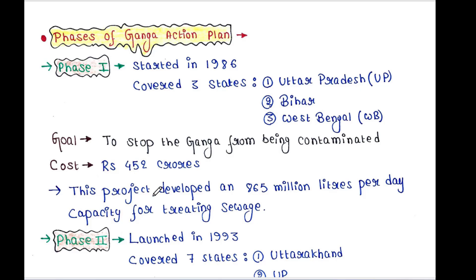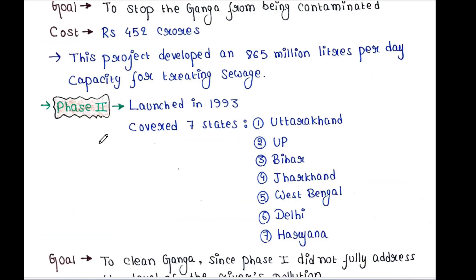The cost of Phase 1 was rupees 452 crores. This project developed an 865 million liters per day capacity for treating sewage. Next was Phase 2, which was launched in 1993.